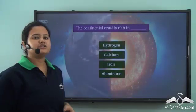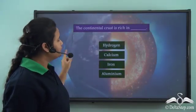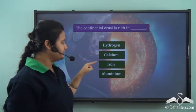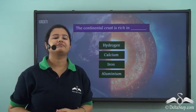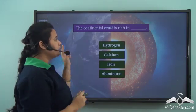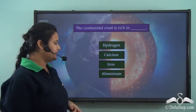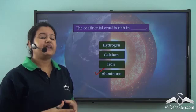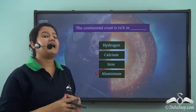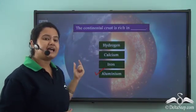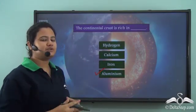Now let us answer this question: the continental crust is rich in — Hydrogen, Calcium, Iron, or Aluminium? The correct answer is Aluminium. We just learned that continental crust is known as Sial, where Si stands for Silica and Al stands for Aluminium. So the correct option is Aluminium.